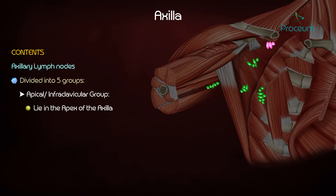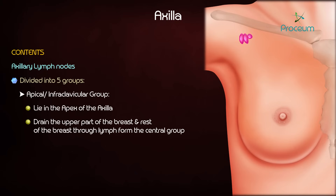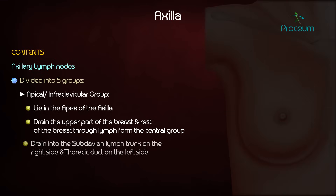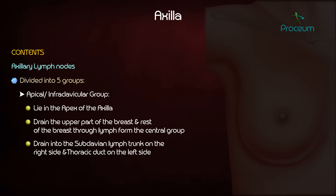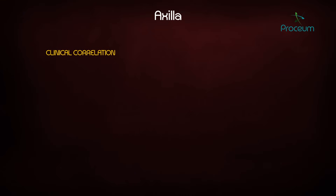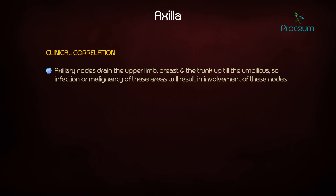The apical or infraclavicular group lies deep to the clavipectoral fascia in the apex of the axilla. They drain lymph from the upper part of the breast and the rest of the breast through lymph from the central group. They drain into the subclavian lymph trunk on the right side and the thoracic duct on the left side.